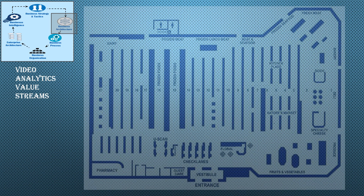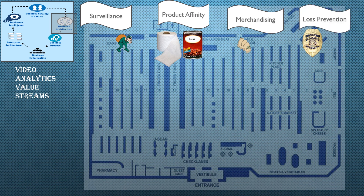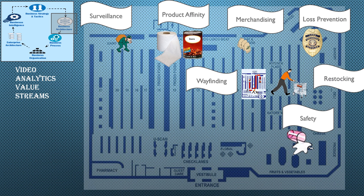We move around to the next group, which is the business architecture, and one of the key areas there is the value streams. You'll select the appropriate value stream for the strategy you've chosen. One of the value streams is around surveillance — being able to watch particular areas or items. Product affinity — being able to identify things that might cross-sell to your customers. Merchandising — making sure you have the right set of products to sell in your store. Loss prevention — identifying areas that you could be losing things because people would steal them. Restocking — that's keeping your shelves fully stocked so that the merchandise can be sold or run through a product affinity analysis. Safety — making sure that the place is safe. Wayfinding — help guide your customer through the store to follow their shopping list or guiding the robots through the store to help pick items for a particular customer, which leads to robotics itself.